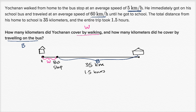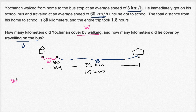So what do we know? We know the distance covered by walking plus the distance covered by bus is going to be 35 kilometers — that is the entire distance from home to school. So we know that W plus B is equal to 35 kilometers.